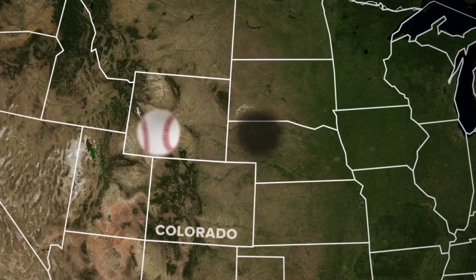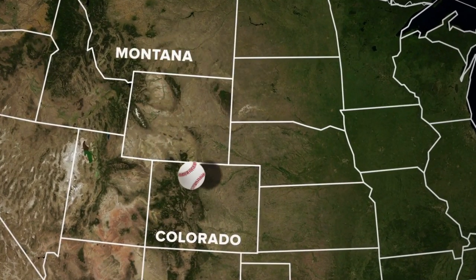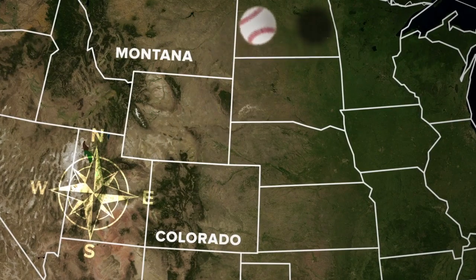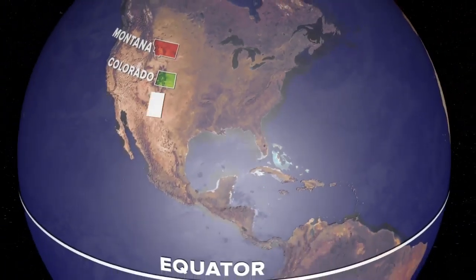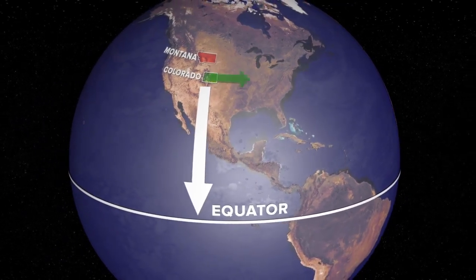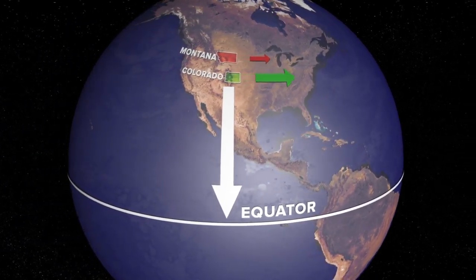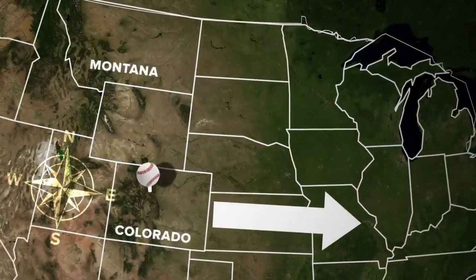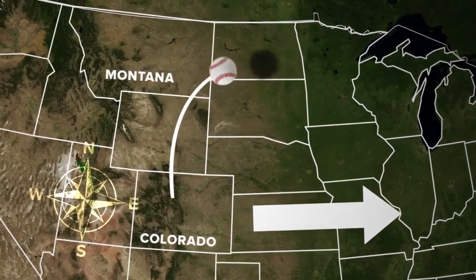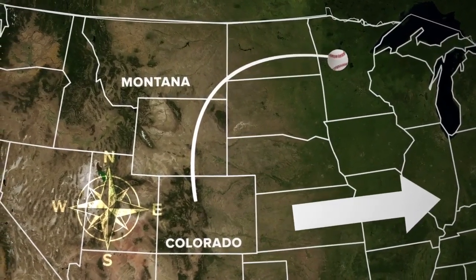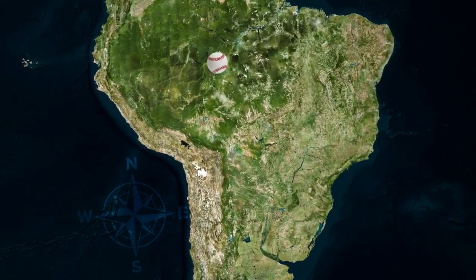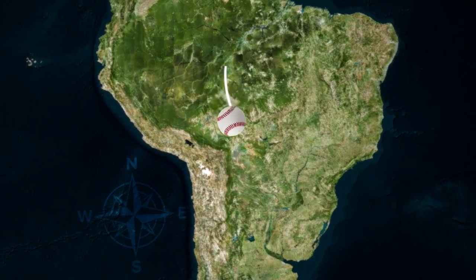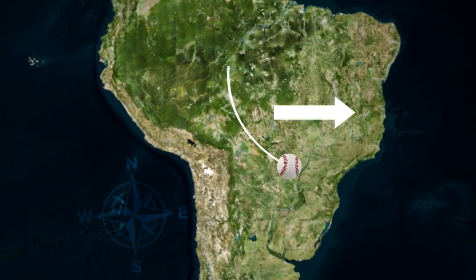Say you had superpowers and you could throw a ball from Colorado to Montana. If you threw it straight north, it would actually end up further east, say in Minnesota. Colorado is closer to the equator and moving faster around Earth's axis than Montana. So when you throw the ball, it appears to curve to the right as that momentum is conserved as the Earth rotates beneath. The opposite happens in the southern hemisphere — the Coriolis effect curves objects to the left.